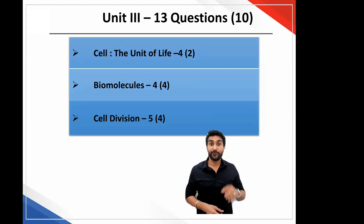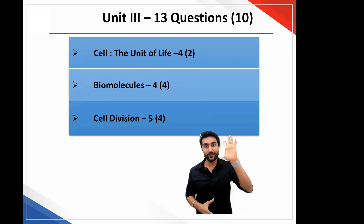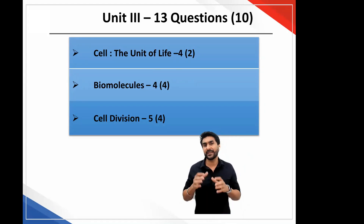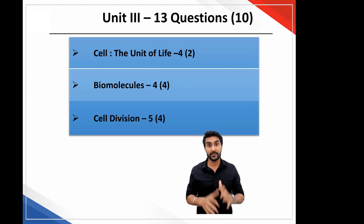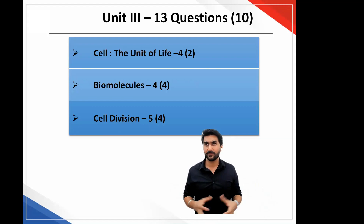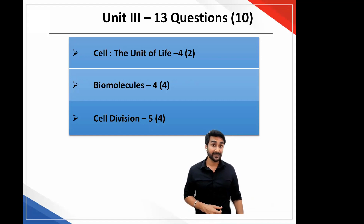Unit three — the cell unit — had 4 questions from the cell chapter, 4 from biomolecules, and a huge number from cell division: 5 questions from such a small chapter. So 13 questions came from this unit. Generally you would expect 8 to 10 questions from this unit, but this year they asked 13. The major increase was from the cell chapter and the cell division chapter. Four from the cell chapter is not unusual, but asking 5 questions from cell division is a bit too much. This should help you understand that cell division is not a chapter to be ignored.